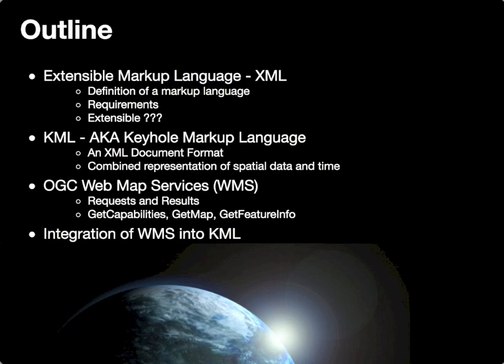We will then start our discussion of Open Geospatial Consortium Services with a conversation about Web Map Services, or WMS, with an overview of the requests and results of those requests, with a particular focus on the GetCapabilities, GetMap, and GetFeatureInfo requests and their responses from a remote server. Finally, we will have a brief discussion of the integration of Web Map Services into KML files as an alternative way to display information in a KML document.